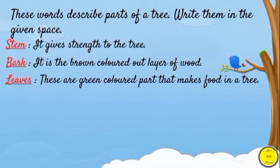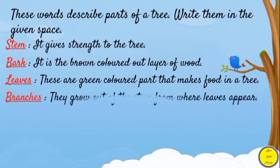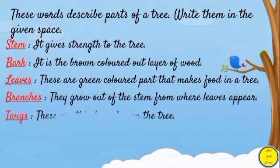Leaves — these are the green colored part that makes food in a tree. Next one: branches — they grow out of the stem from where leaves appear. Next: twigs — these are thin branches on the tree.